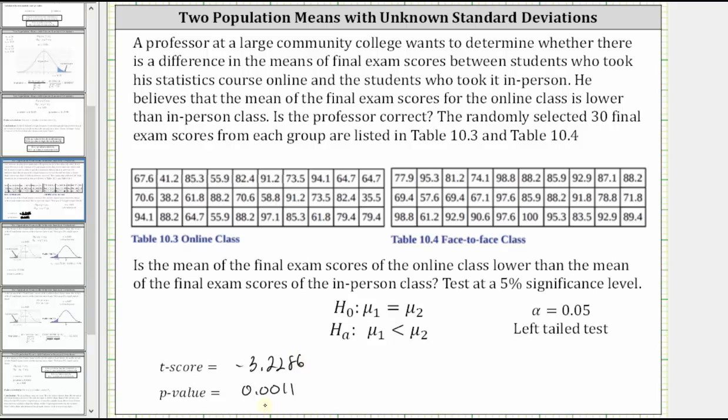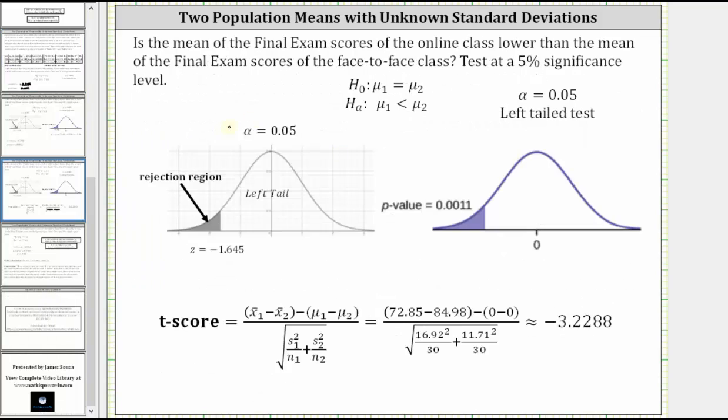Before we compare the p-value and alpha, let's take a closer look at the t-score of negative 3.2286. If we were doing this test by hand, we would take the alpha of 0.05, and knowing we have a left-tail test, find the corresponding z-score, which I've already done here on the left. Notice how the z-score is negative 1.645.